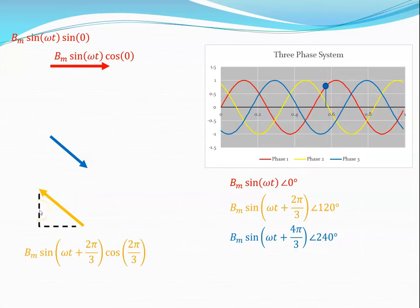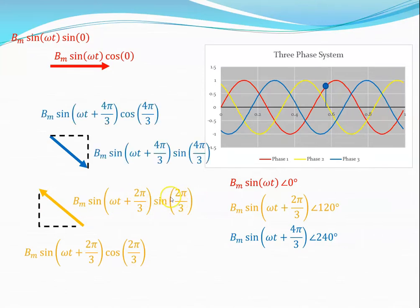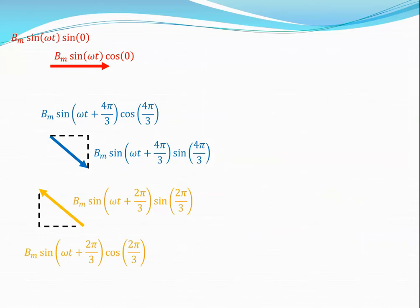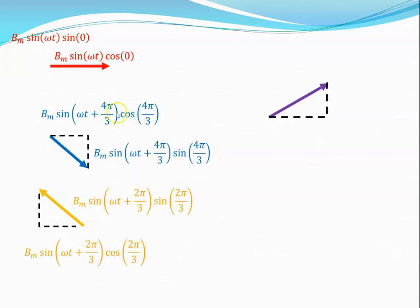The vertical component will be BM sine(omega T + 2π/3) · sine(2π/3), and exactly the same for the blue except that the angles change to 4π/3. So if we want to add all of those together to get the resultant, we add the horizontal components and then add the vertical components. The vertical components will be the sum involving sine(0), sine(2π/3), and sine(4π/3).